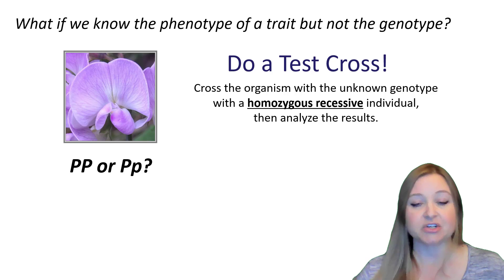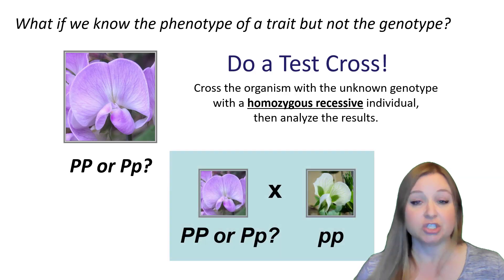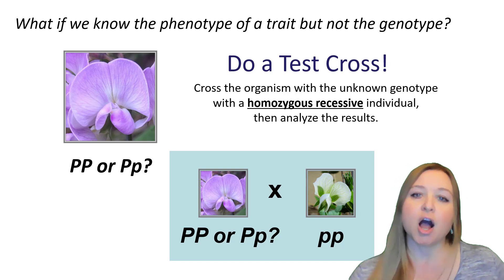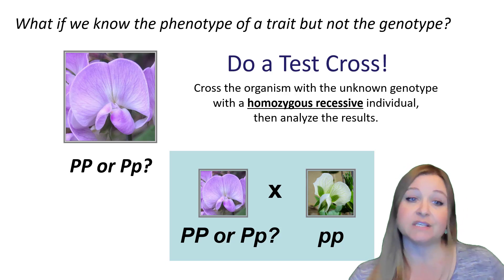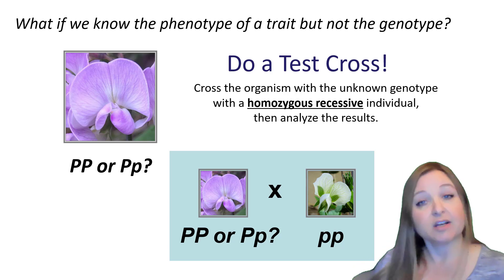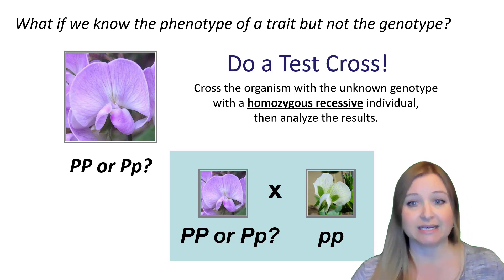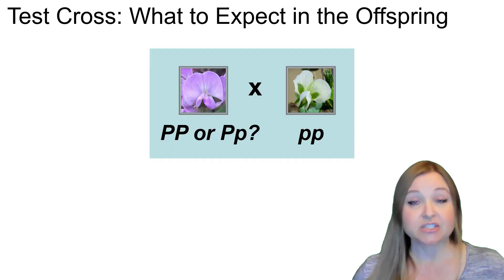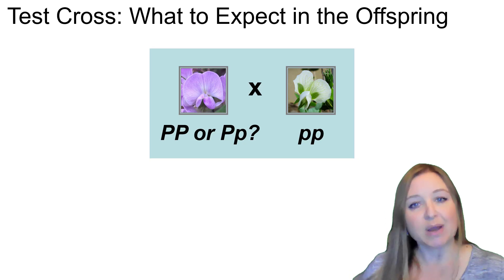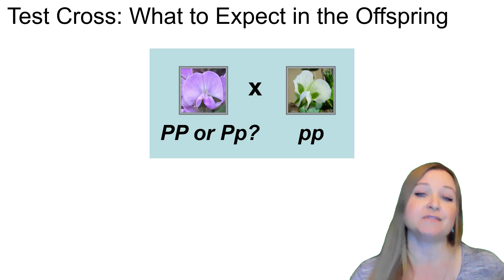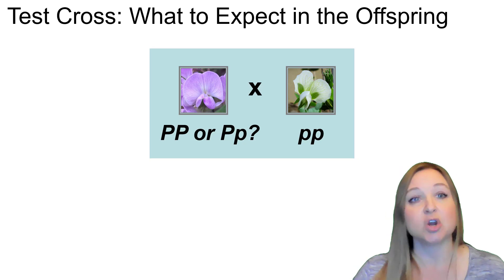Now we're going to set up our test cross. The first thing we need to do is figure out, using a Punnett square, what the offspring will look like if the parent purple plant is homozygous dominant, and then what the offspring would look like if the parent plant was heterozygous. We'll physically do the cross by pollinating that purple flower plant with the white flower plant and compare the results to our expected scenarios.